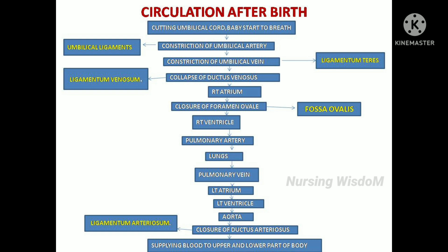Now let's see postnatal fetal circulation using this flow chart. After cutting the umbilical cord, the umbilical artery constricts first to prevent blood flowing back from the fetus to the placenta and becomes the umbilical ligaments. A little later, the umbilical vein constricts, allowing drainage of blood present in the umbilical vein to the fetus — around 80 to 100 ml of blood will drain to the baby. Then the umbilical vein constricts and forms the ligamentum teres. The umbilical vein blood flow reduces, so the ductus venosus collapses and becomes the ligamentum venosum. Blood flow to the right atrium is now low, so right atrial pressure is low. But the pressure in the left atrium is high, and that pressure pushes back the septum primum to close the foramen ovale.